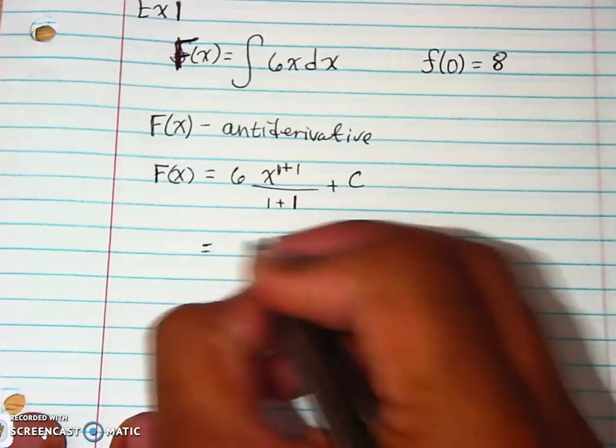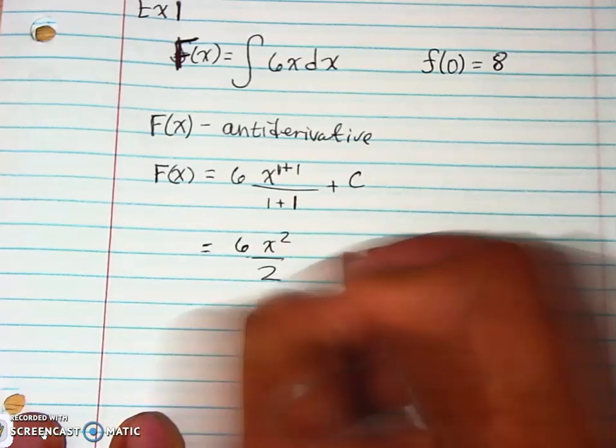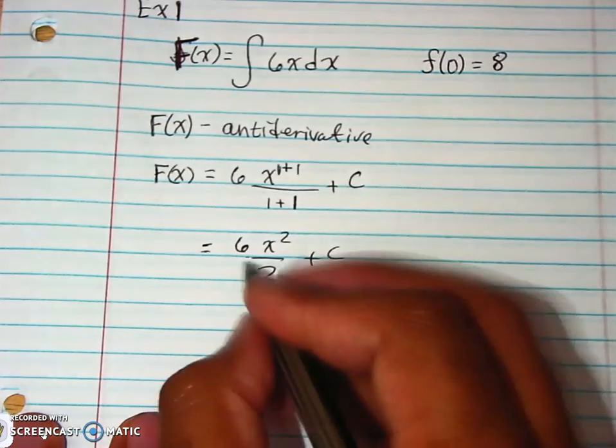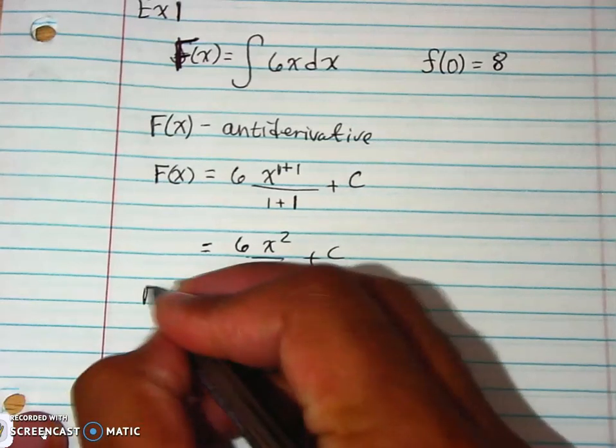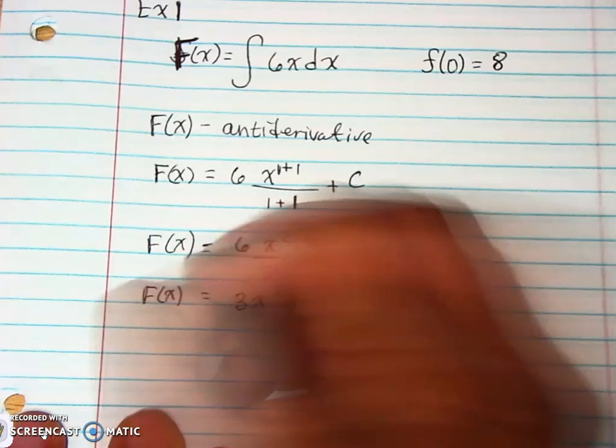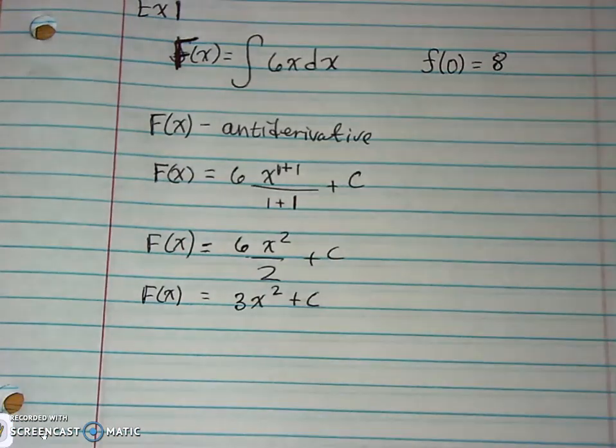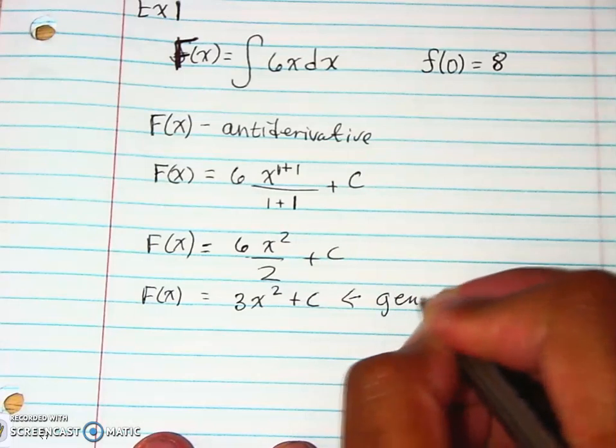All right. Then we simplify everything down. So we have 6x squared over 2 plus C. And so simplify. That is 3x squared plus C. All right. So that is this portion here. Now, with that, that's our general solution.